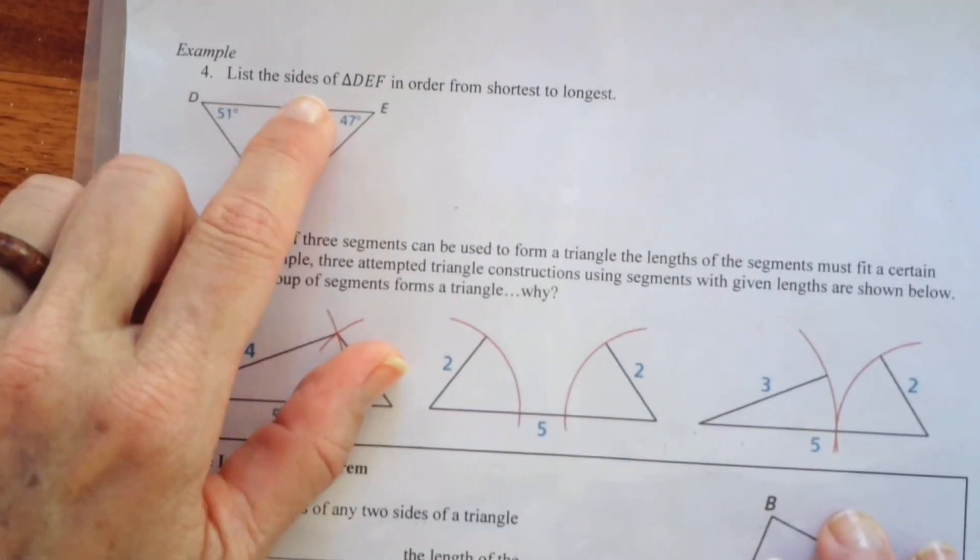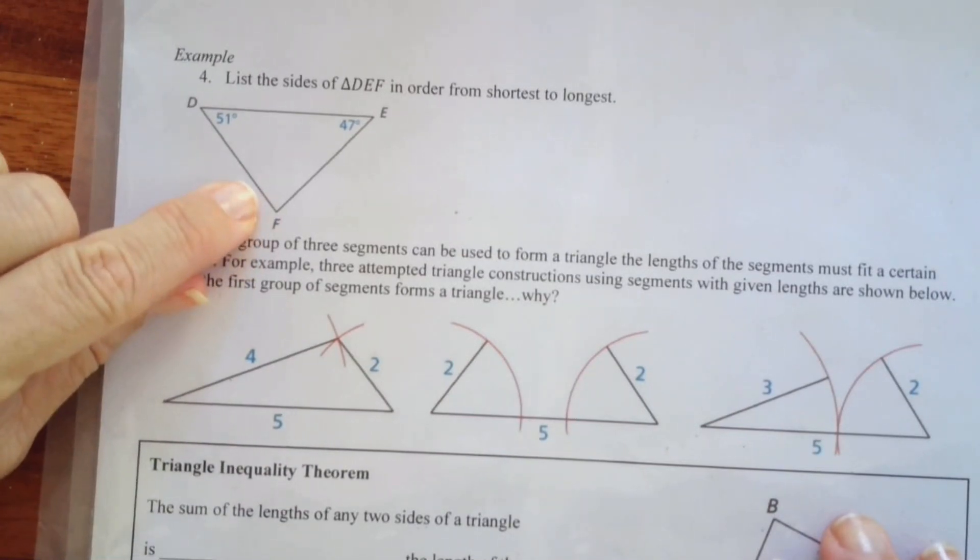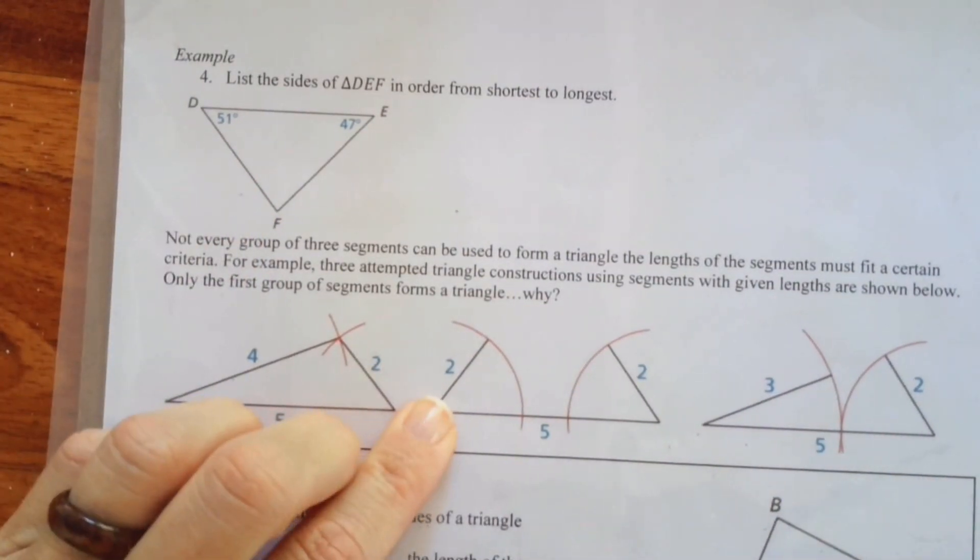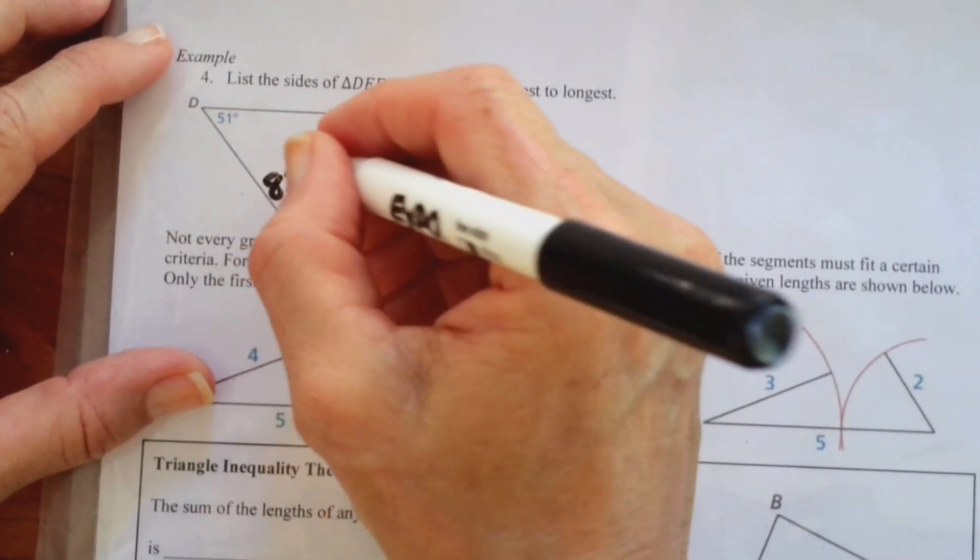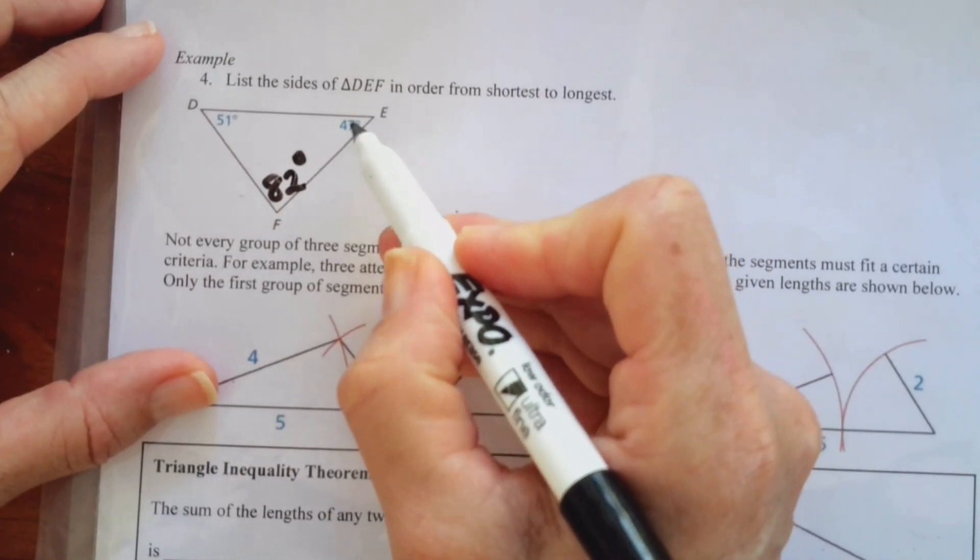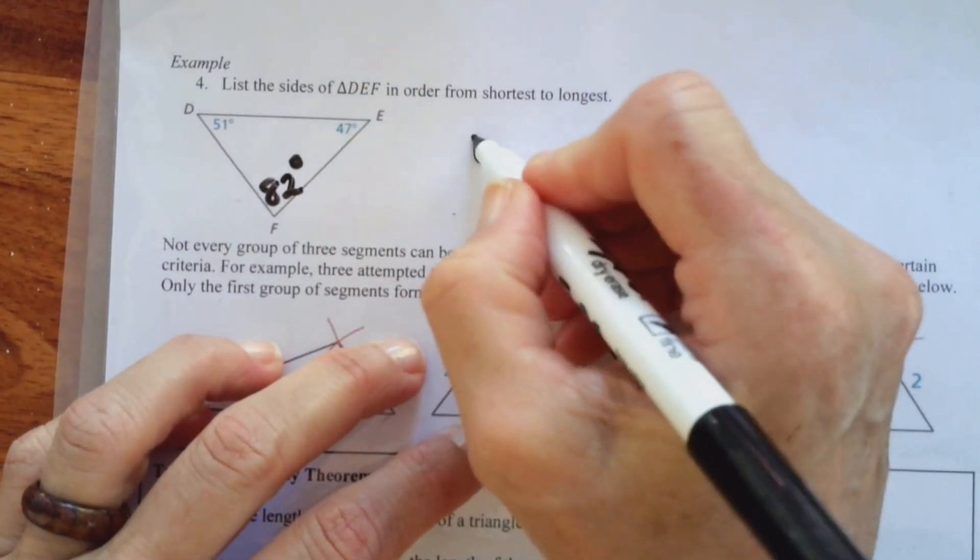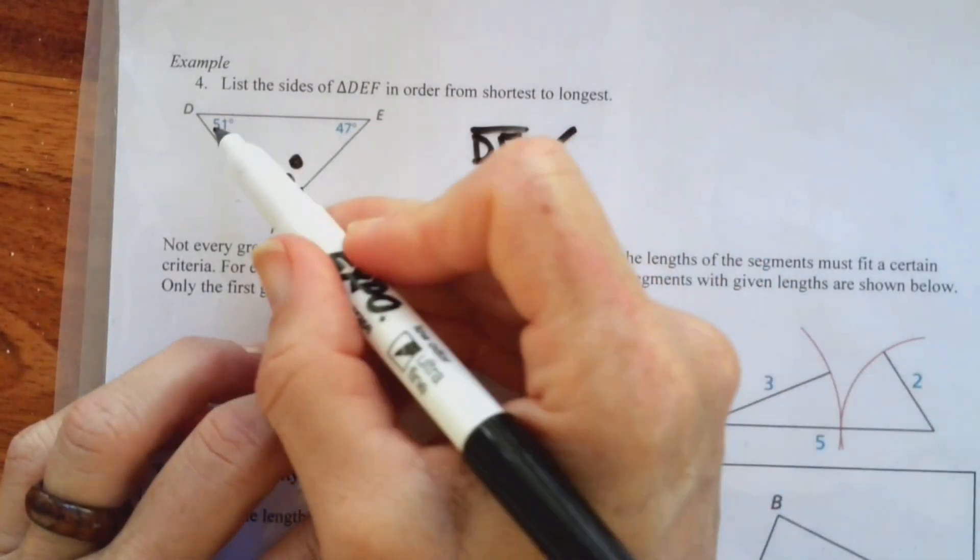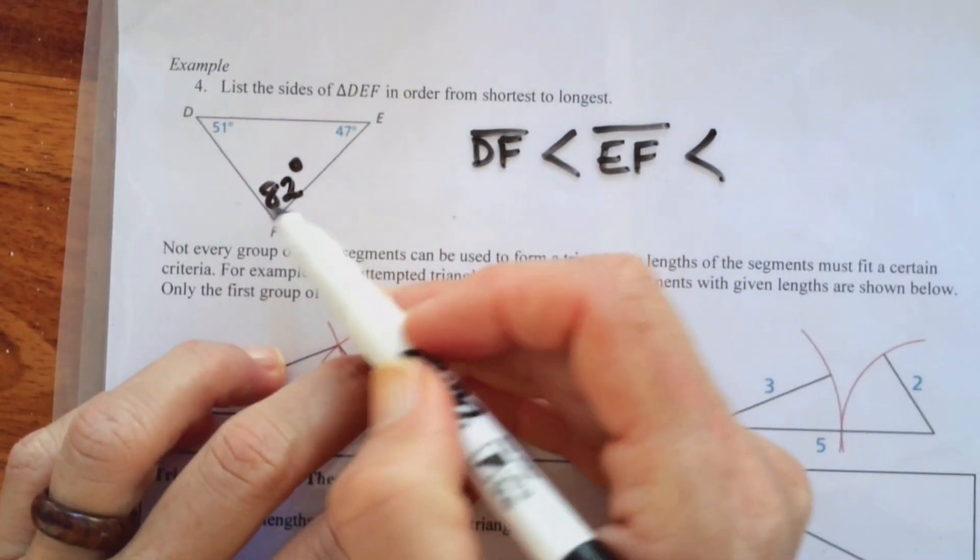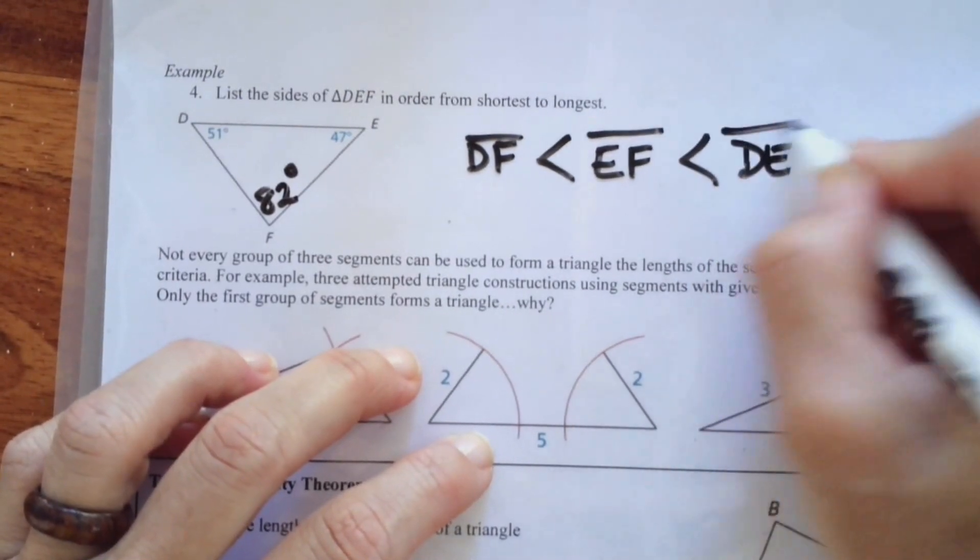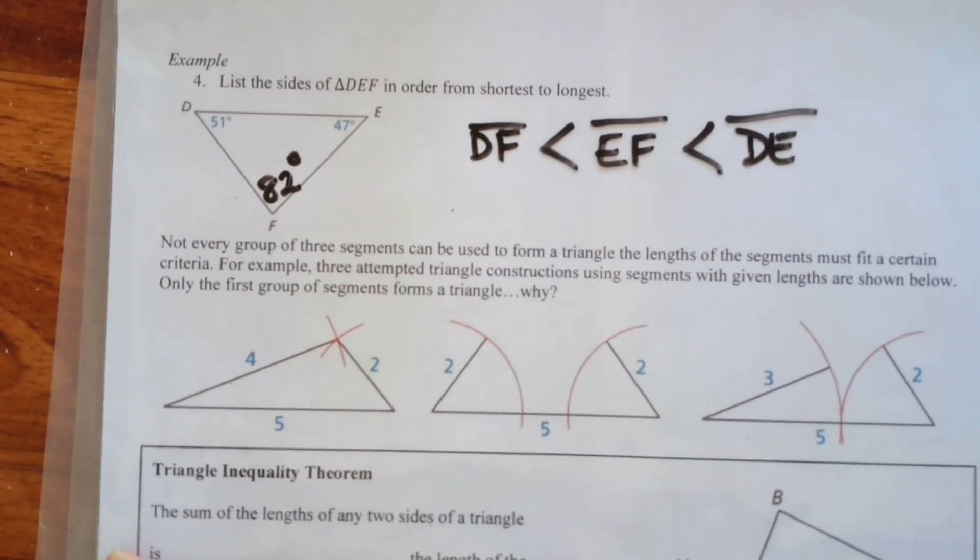But we are going to do this problem here. So list the sides of DEF in order from shortest to longest. So I have angle measurements here. And so what I have to do is figure out what that measurement is. Which if you add 51 and 47, that's 98. So 180 minus 98 gives me 82. And now we have our smallest, our medium, and our largest. So here's the smallest. It's across from DF. So DF is smallest. This is the middle. It's across from EF. EF is the middle. And 82 is the biggest. So that's across from DE. And hopefully you can see that's how the theorem works. It's pretty simple.